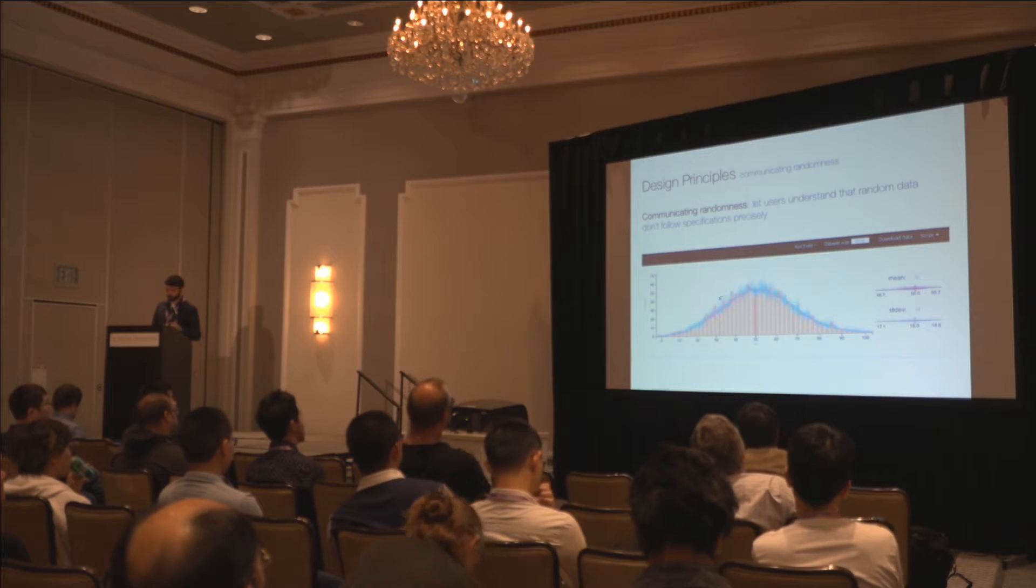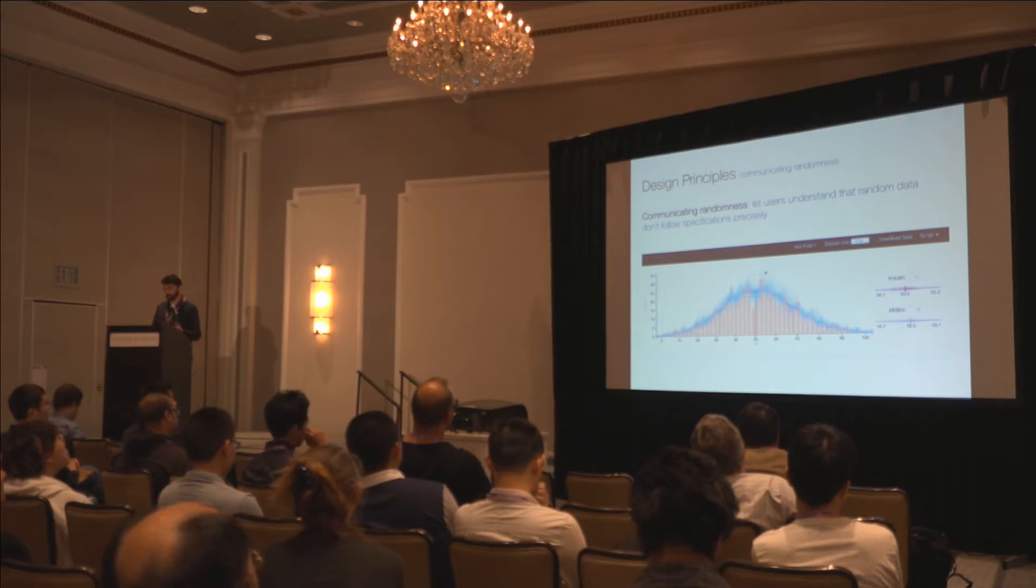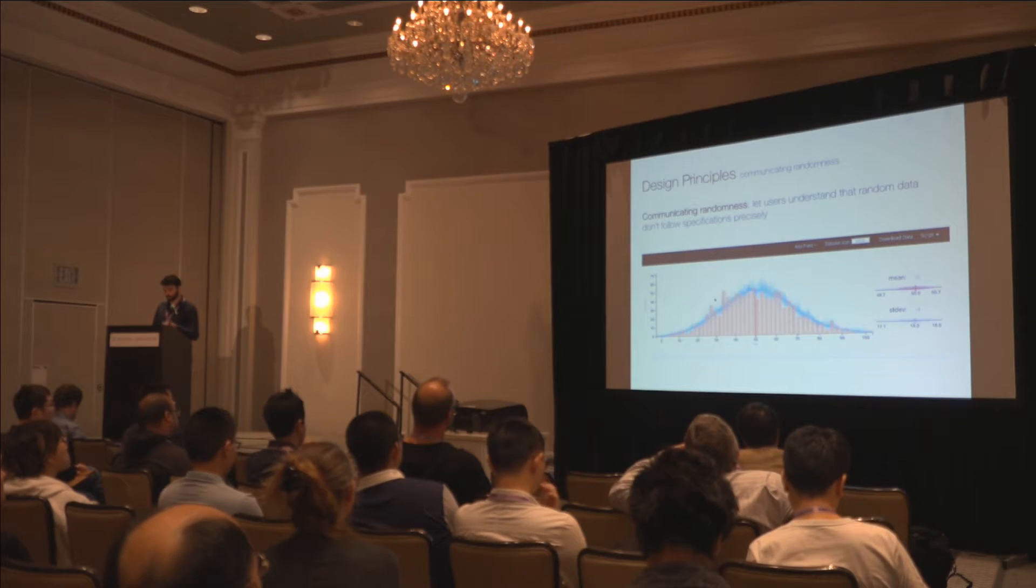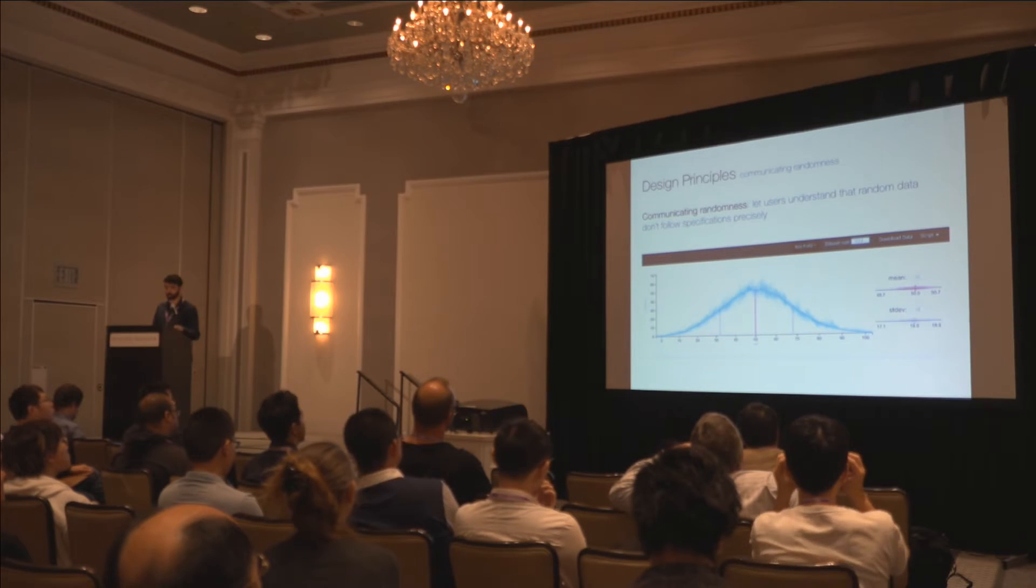To avoid the illusion of precision and enhance the trust in the tool, it's important to illustrate the user that the generated data deviates from their idealized specifications. And SINNER visualizes multiple possible outcomes for a given sample size. You can see here, with a larger sample size, the generated data is closer to the specification.